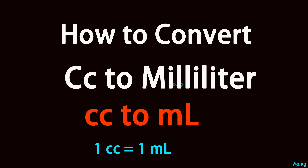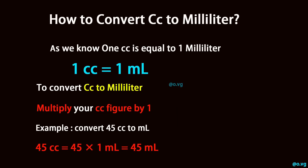How to convert cc to milliliter. As we know, 1 cc is equal to 1 milliliter — 1 cubic centimeter equals 1 milliliter. To convert cc to milliliter, multiply your cc figure by 1.